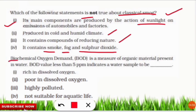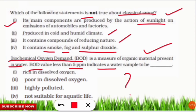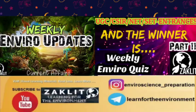The next question: BOD (Biochemical Oxygen Demand) is a measure of organic material present in water. If the BOD value is less than 5 ppm, what does it indicate? A low BOD means the water is very clean and not polluted. It is rich in dissolved oxygen, so aquatic life can sustain itself. Therefore, option number one — indicating the water is not polluted and is suitable for aquatic life — is the correct answer.